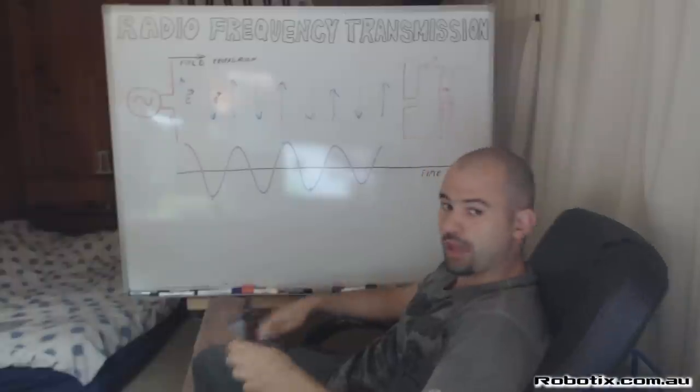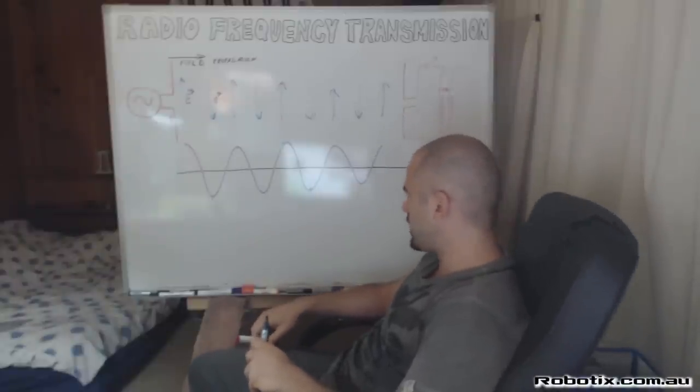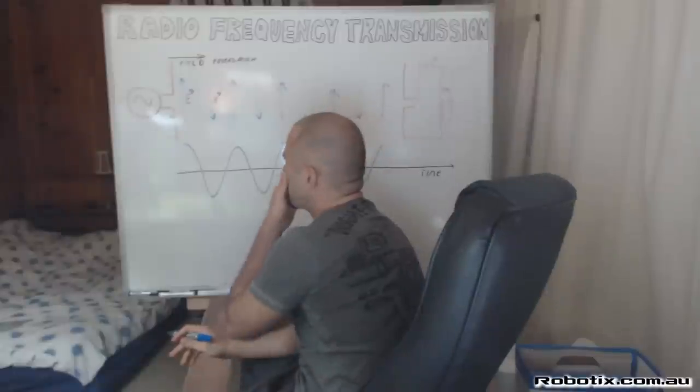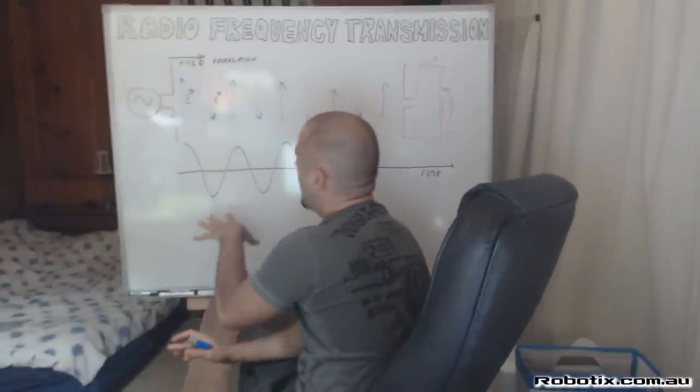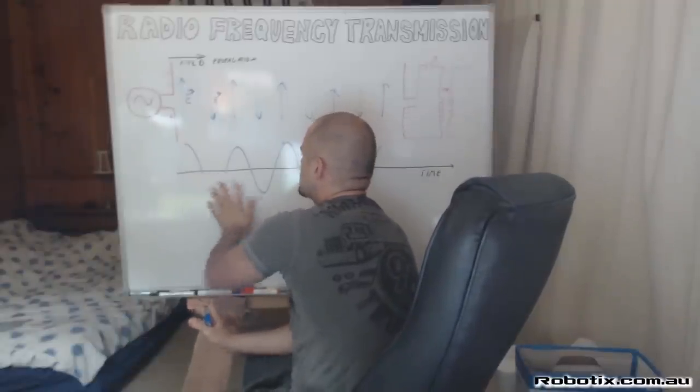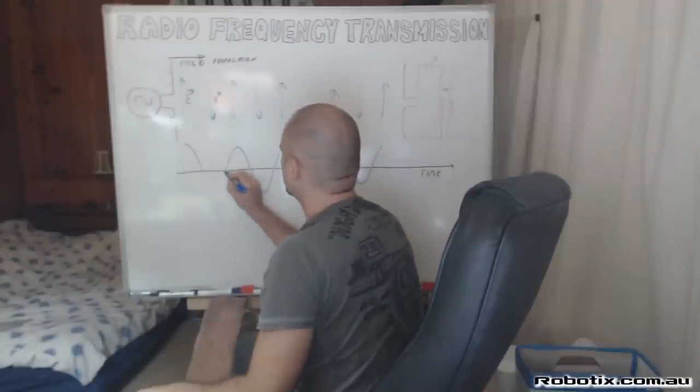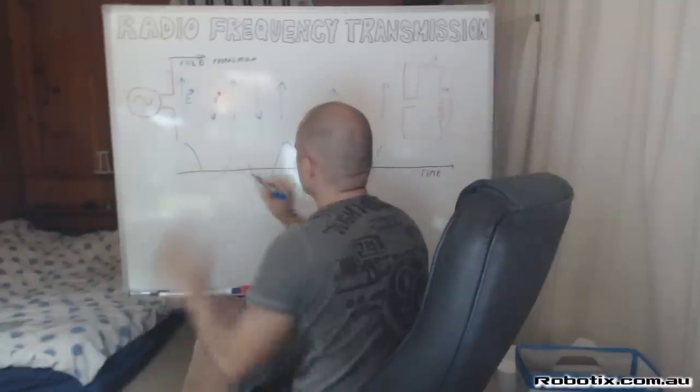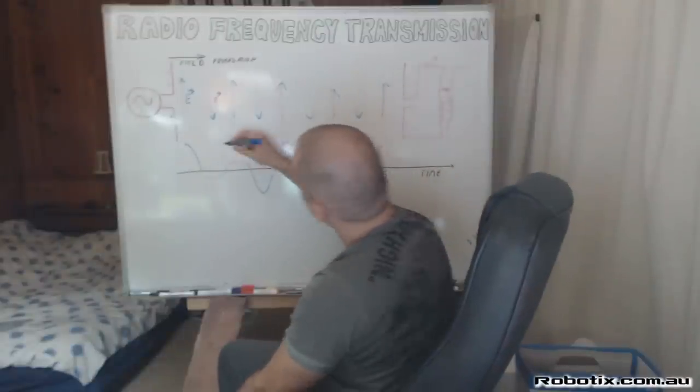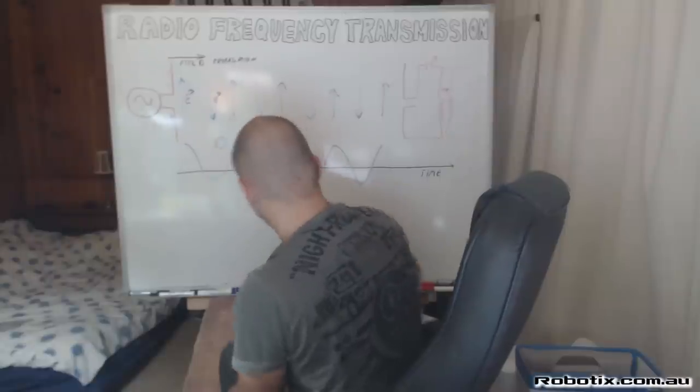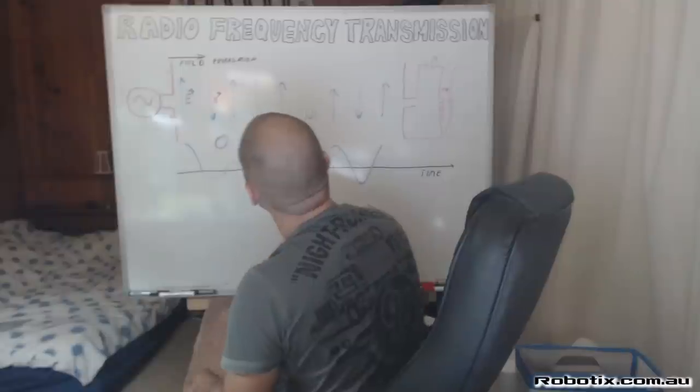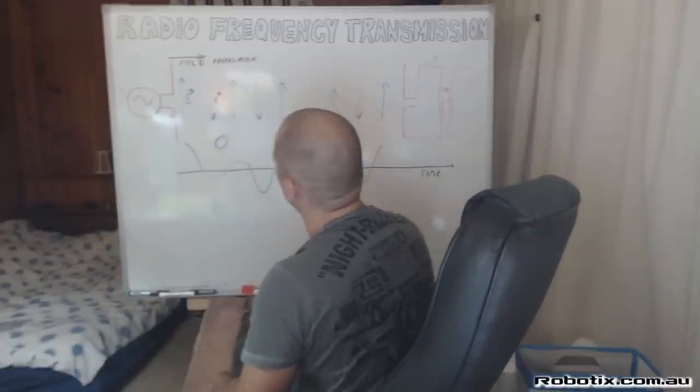And the next question you probably logically have is, how does this wave carry information? Well, that's where letters like AM and FM come in. So AM would be amplitude modification. And amplitude modification works a little like this. You essentially take these waves and you lower their amplitudes. So when you lower an amplitude of a wave, that becomes a zero, which would make this wave a one and that wave a one.